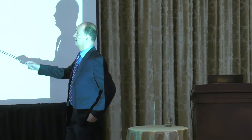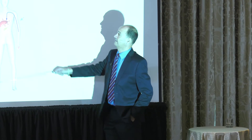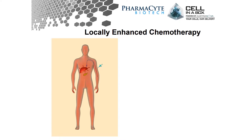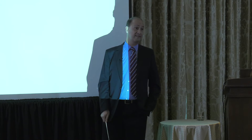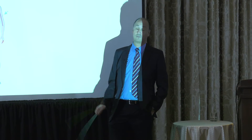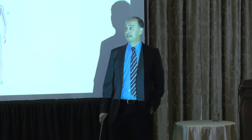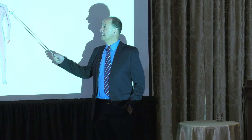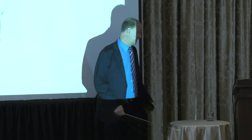Cytochrome P450 has about 50 different members, and the majority are expressed in the liver. In normal chemotherapy, the chemotherapeutic — ifosfamide or cyclophosphamide — is given IV, finds its way to the liver where cytochrome P450 enzymes are expressed, and then the toxic form is shipped out all around the body and attacks dividing cells. But it also attacks other harmless dividing cells — hematopoietic stem cells causing loss of white blood cells, cells lining the gastric tract causing sickness, and hair follicles causing hair loss.